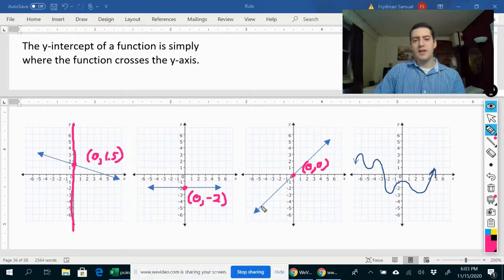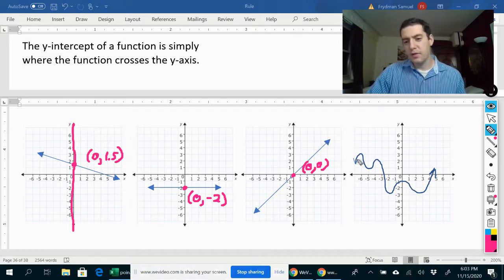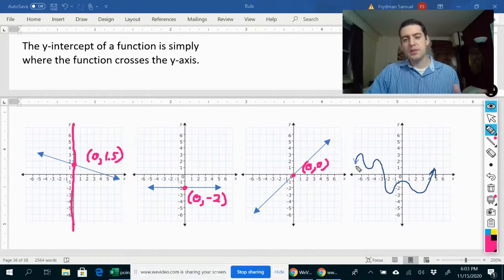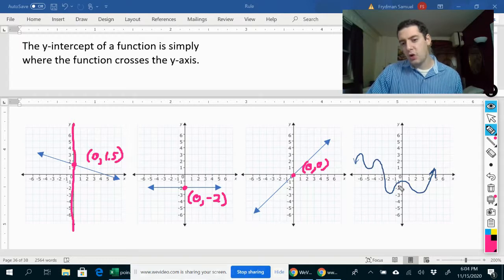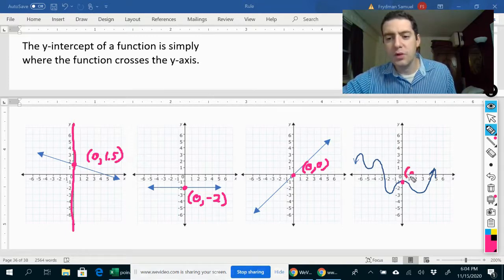And by the way, a function does not have to be linear for us to figure out where the y-intercept is. So for example, over here, this is clearly not a linear function. We have this crazy curve here, but it's still the same principle. The y-intercept is simply where this crosses the y-axis, and that would be right over here, and that would be the point zero, negative one.